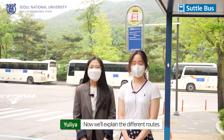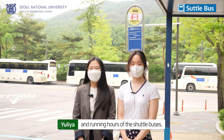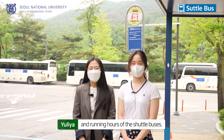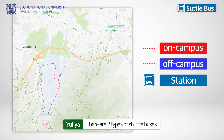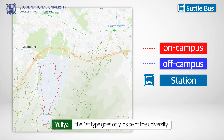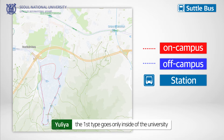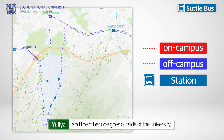Now we will explain the different routes and running hours of the shuttle buses. There are two types of shuttle buses: the first type goes only inside of the university, and the other one goes outside of the university.